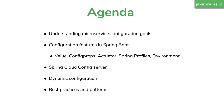Here's the agenda for the course. We will start by understanding the goals for microservice configuration and what is the ideal target state for a configurable set of microservices. Then we look at some of the configuration features in Spring Boot — there's a bunch of them. We look at the Value annotation, Config Props, how Actuator can help us, Spring Profiles, the Environment object, and a whole lot more.